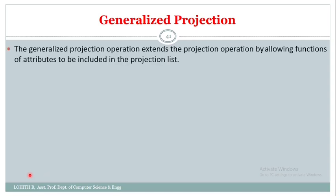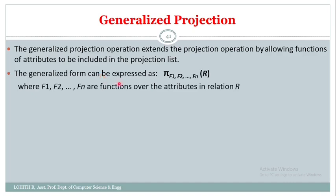Let us understand about generalized projection. The generalized projection operation extends the project operation by allowing functions of attributes to be included in the projection list. We already learned about the pi operation to retrieve particular columns; here it is extended to perform functions on attributes in the projection list. The syntax uses pi with f1 and f2 as functions on the attributes of relation R.